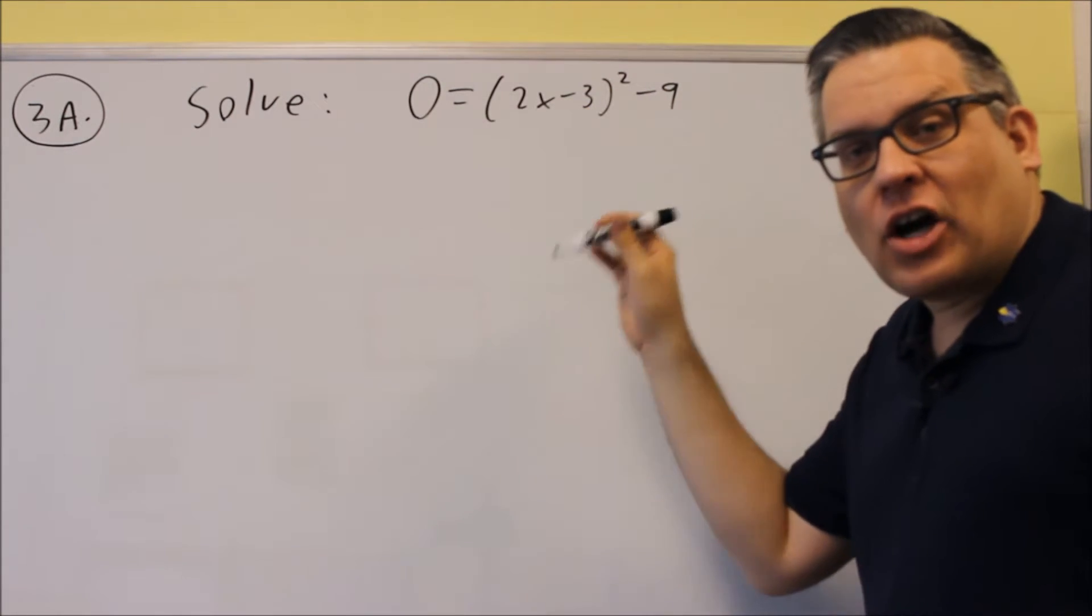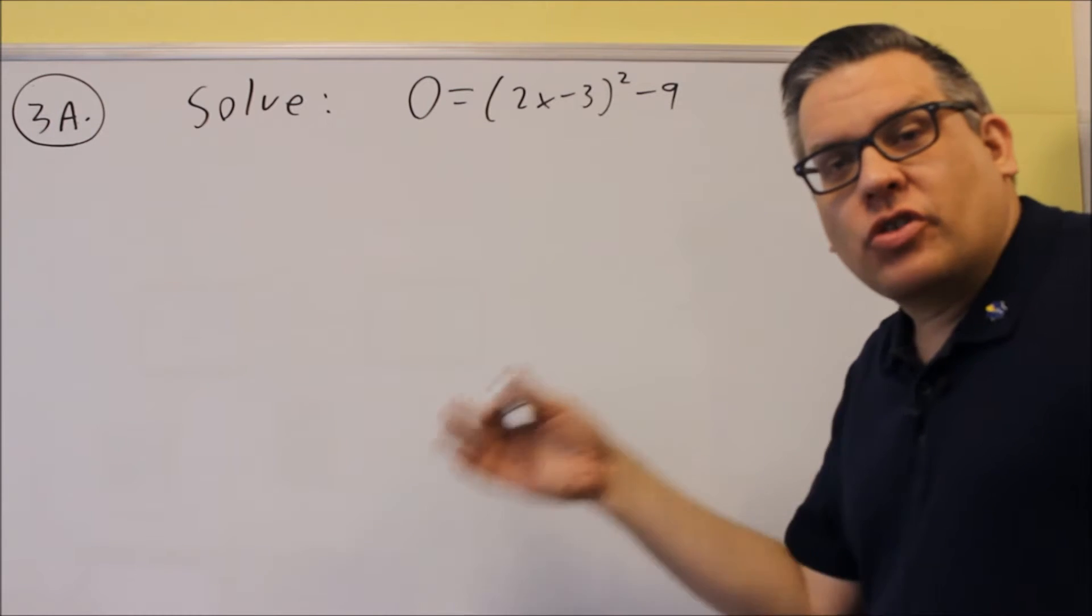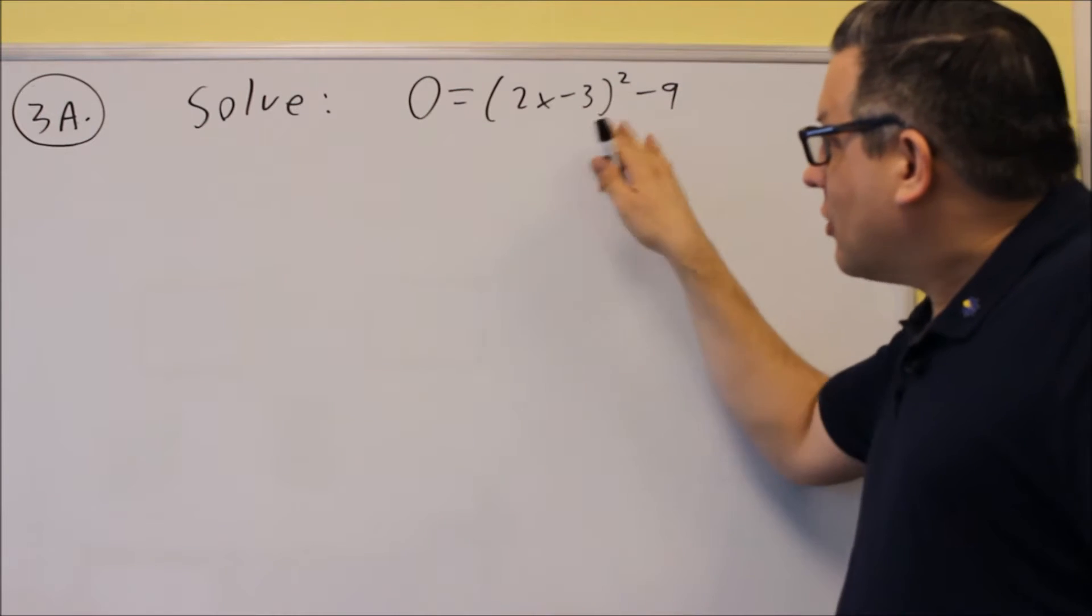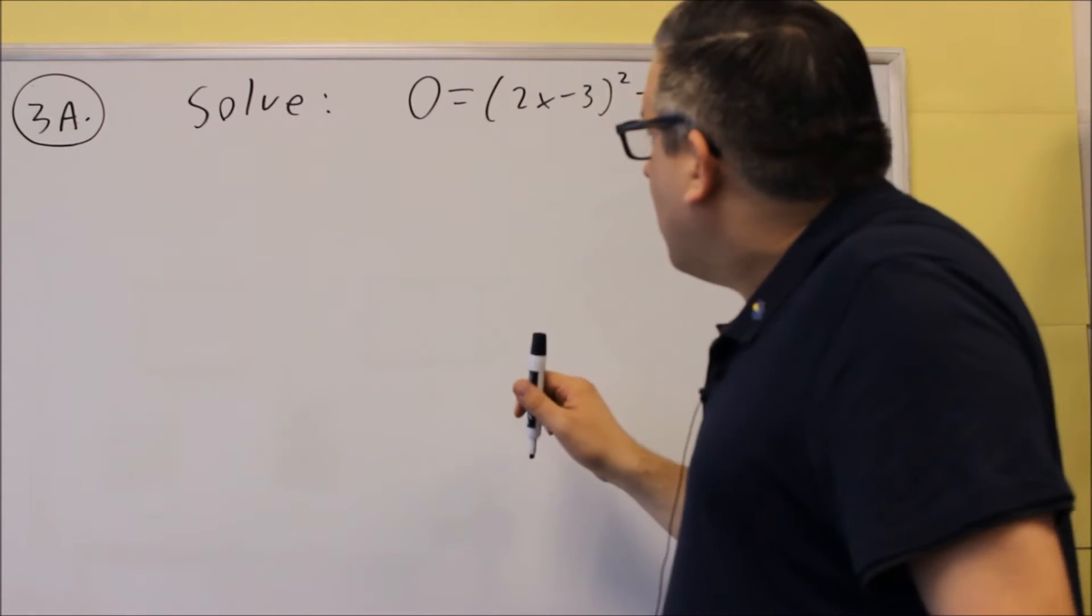Again, you could expand it all out, multiply it all out, combine it together, and then use either factoring or quadratic. But in this form, it's much easier to do it by the square root principle. So let's go ahead and do it that way.